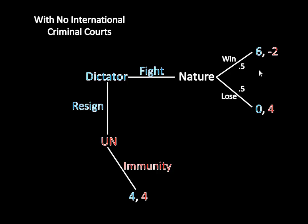It's much better than dying, but not as good as continuing to be in charge of your country, which is what happens if he wins. If the dictator wins, that's the worst outcome for the United Nations — it gets negative 2. If the dictator loses, the United Nations is happier because the dictator gets brought to full justice, but it's going to be costly to fight the war, so there's a subtraction from the payoff, which is why that's 4. The way we collapse this part of the game tree is by multiplying the probabilities by their associated payoffs and adding them up.